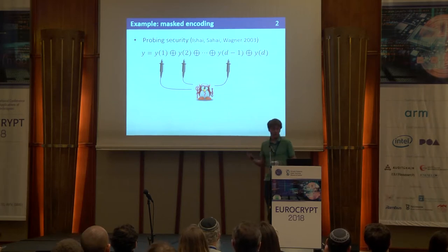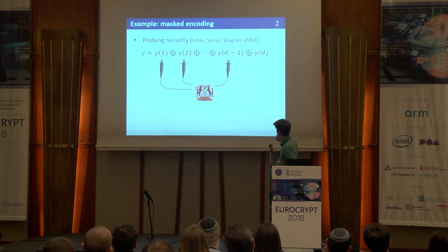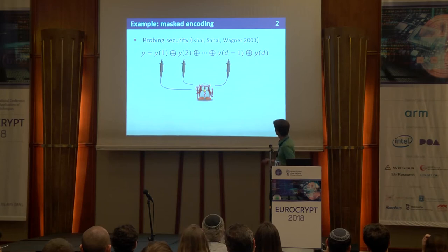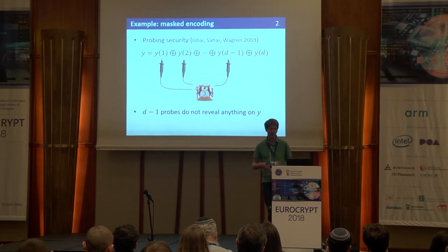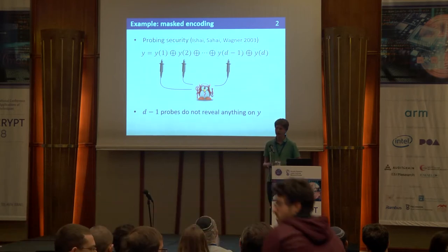This has been explained already so I'll be brief. The idea with masking is that whenever you want to manipulate some secret variable Y, you split it into D shares. This can be analyzed in the abstract probing model introduced by Ishai, Sahai, and Wagner 15 years ago. If the adversary can observe up to D minus 1 probes, he will not learn anything about the secret. If he can probe all the wires, then he gets the secret in full.